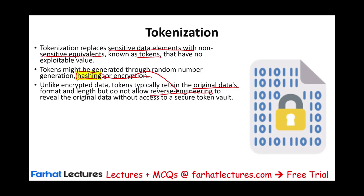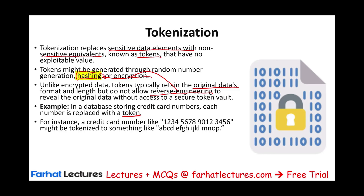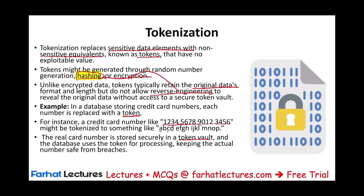Once you hash the information, you cannot reverse it. You have to produce the same hashing figures when you 'decrypt' hashed data. For example, in a database storing credit card numbers, each number is replaced with a token. A credit card number like 1234567890123456 may be tokenized to something like ABCDEFG. The real card number is stored securely in a token vault, and the database uses the token for processing, keeping the actual number safe from breaches. The system takes the true numbers, converts them to tokens, and sends them to the company, which goes to the vault to verify. This is tokenization.